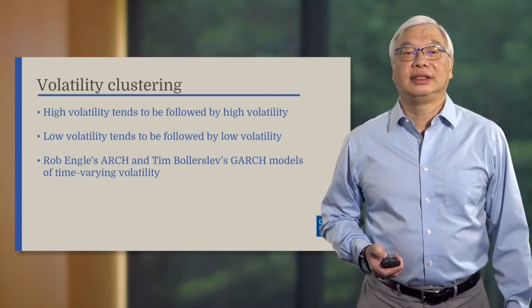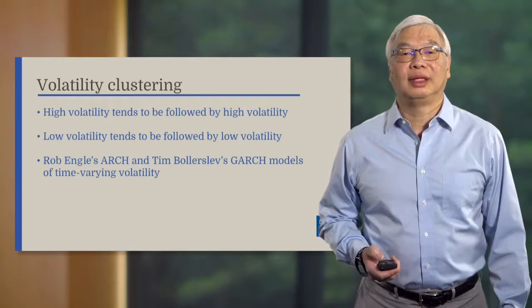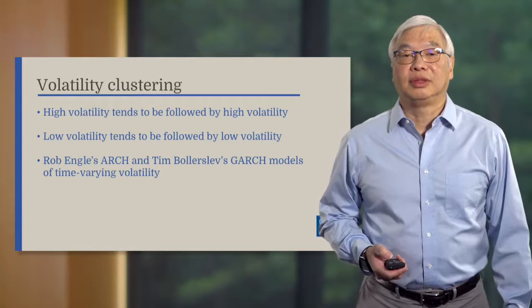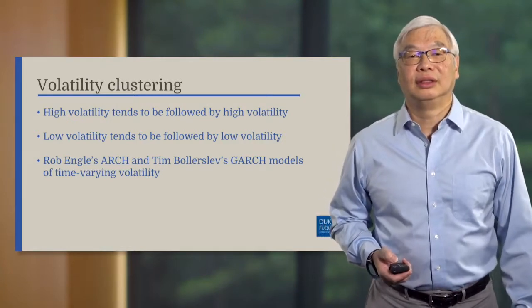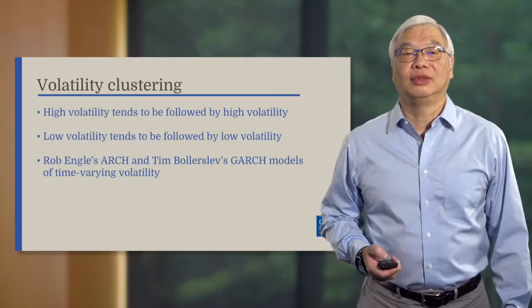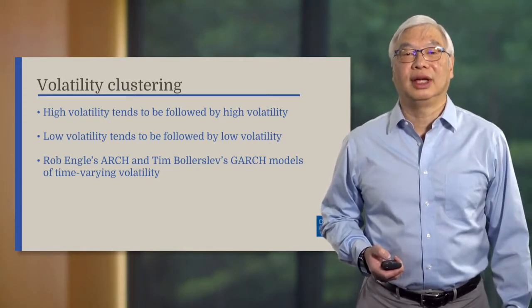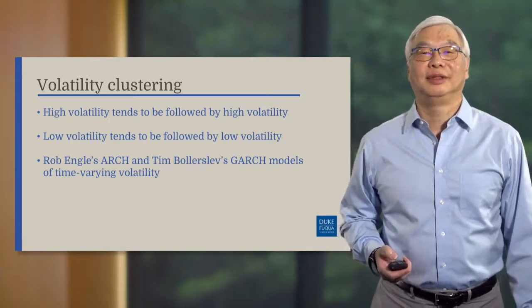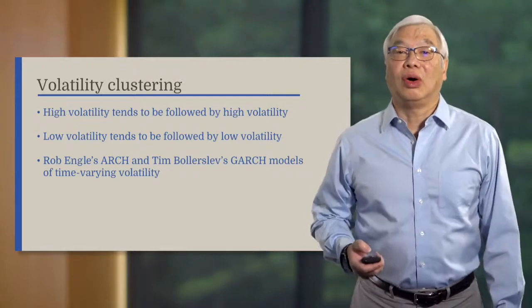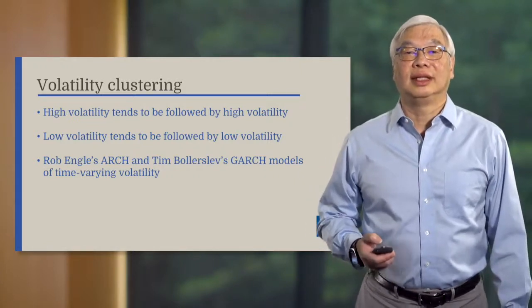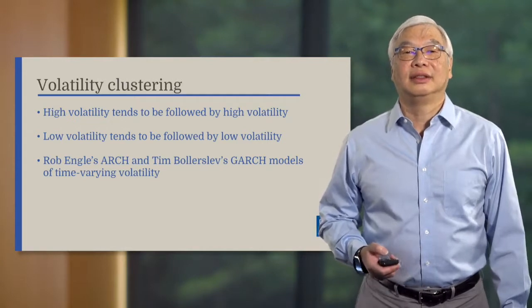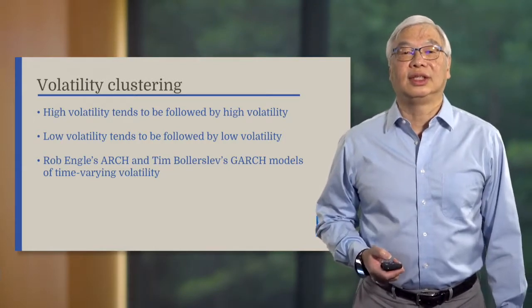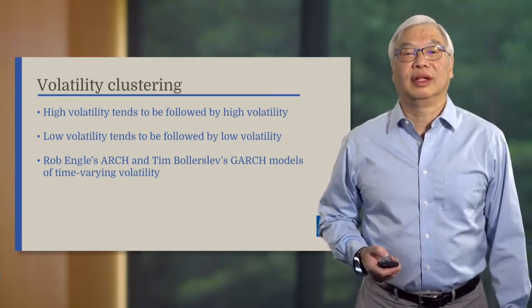The idea of volatility clustering started with a paper by Robert Engel in 1982. In this paper, Professor Engel proposed a statistical model that he called ARCH, which stands for Autoregressive Conditional Heteroscedasticity. This is quite a mouthful, isn't it? Let me explain these terms. Autoregressive is a term in statistics that refers to the past data affecting future data in the time series. Conditional heteroscedasticity is just a technical term for volatility clustering.